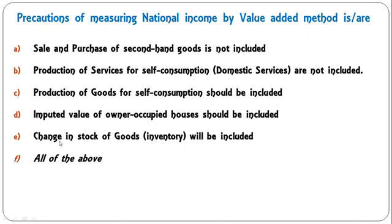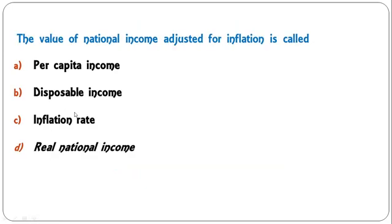What are the precautions of measuring national income by value added method? Sale and purchase of second-hand goods is not included; production of services for self-consumption — domestic services — are not included; production of goods for self-consumption should be included; imputed value of owner-occupied houses should be included; change in stock of goods — inventory — will be included. All of the above is the correct answer.